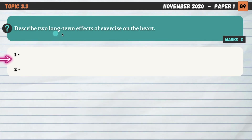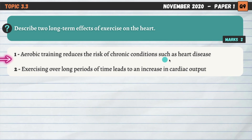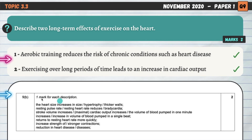Topic 3.3: describe two long-term effects of exercise on the heart. This is exactly the same question we looked at just a few moments ago — and just a couple of papers later — which shows that they ask the same questions time and time again. Aerobic training reduces the risk of chronic conditions such as heart disease. That's a point we didn't make previously. Also, exercising over long periods of time leads to an increase in cardiac output. This is exactly the same mark scheme as before, just duplicated. Clearly this is a question we need to put some time and focus into.